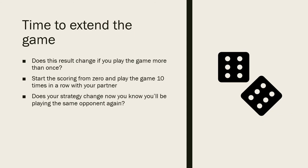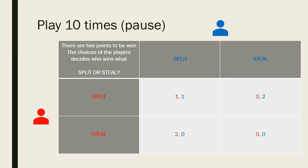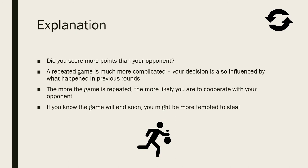We now know what should happen for a single game, but does this result hold if we play the game multiple times against the same player? Start the scoring from zero and play the game ten times in a row with your partner. Does your strategy change now you know you'll be playing the same opponent again? Pause the video now. A repeated game like the one you've just played is much more complicated because your decision is not only influenced by your communication with your partner in this round, but also what has happened in previous rounds. For example, you might trust your partner less if they stole in the previous round, which could make you more likely to steal in this round.